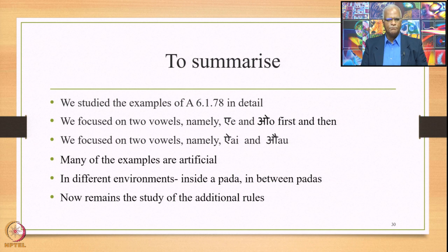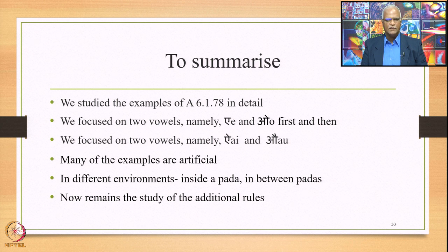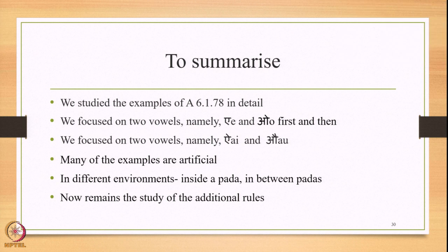To summarize, we studied the examples of 6178 in detail. We focused first on E and O, then on the remaining two vowels — Ay and Av — as substituents, and studied examples where Ay, Av, and Av are the substitutes. Many of these examples are somewhat artificial as words ending in Ay and Av are not frequently encountered. We studied this Sandhi in different environments: inside a Pada and between two Padhas. The study of additional rules explaining this Sandhi further will be done in the next lecture. Thank you for your attention.